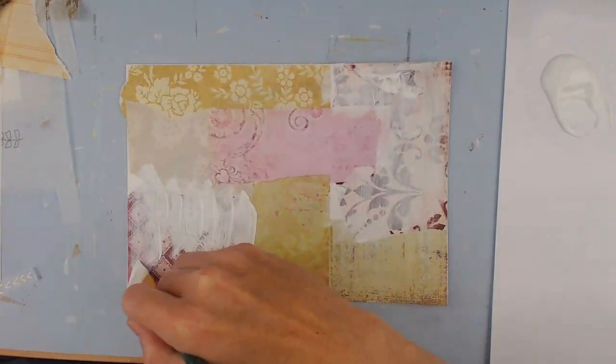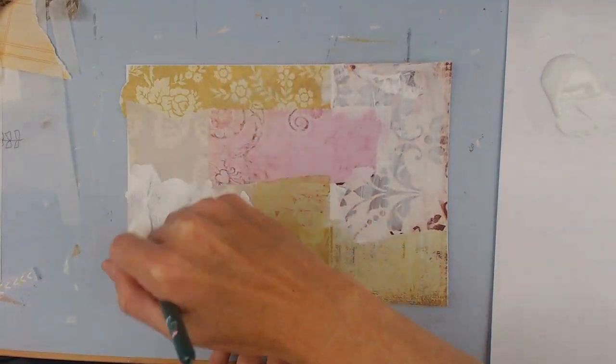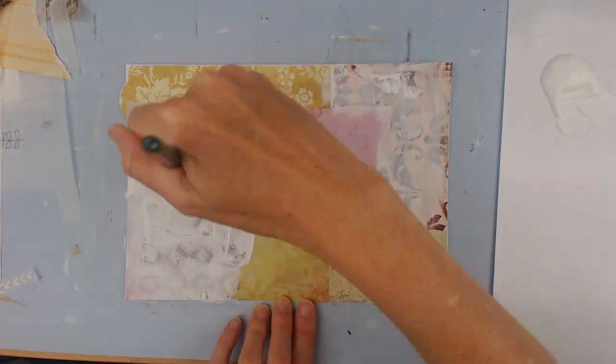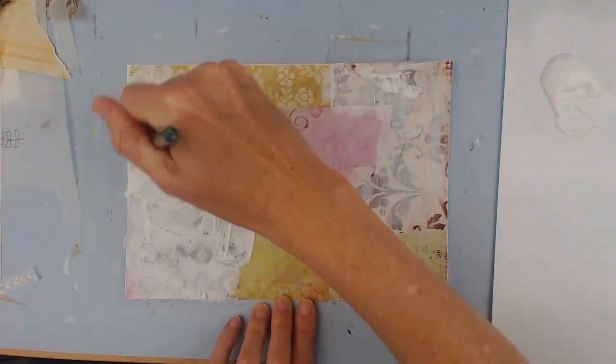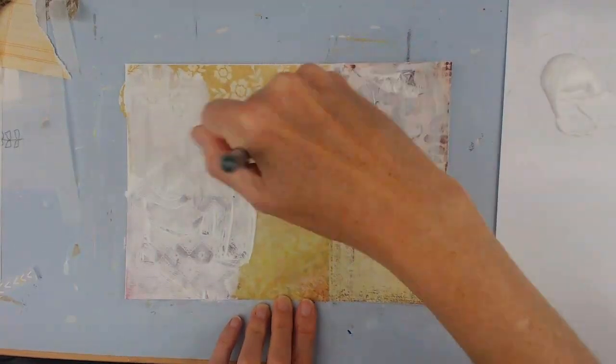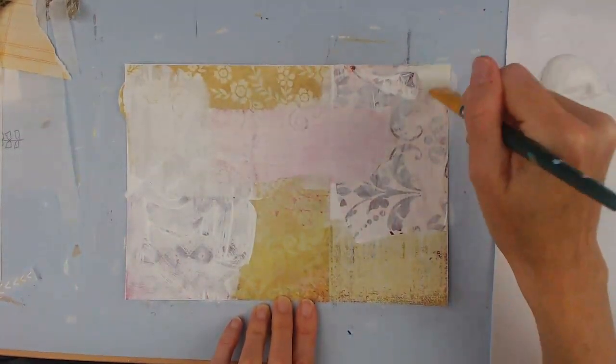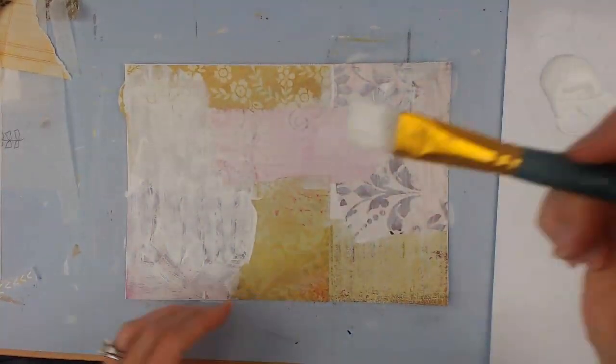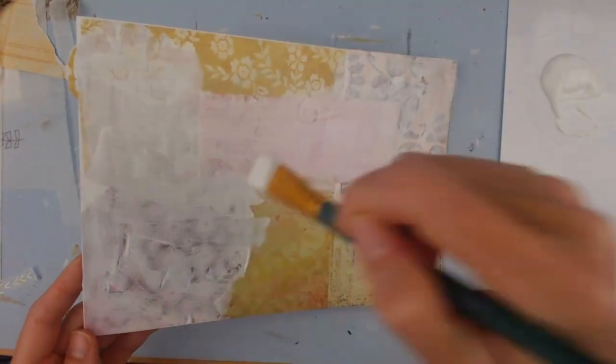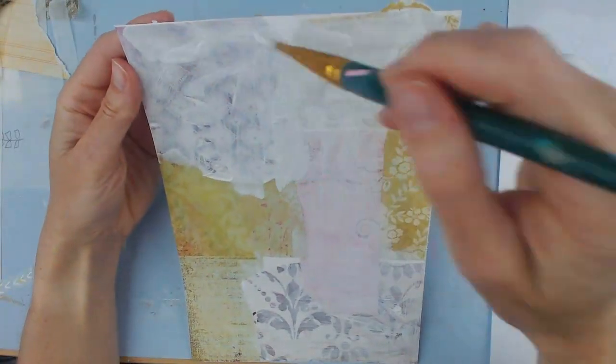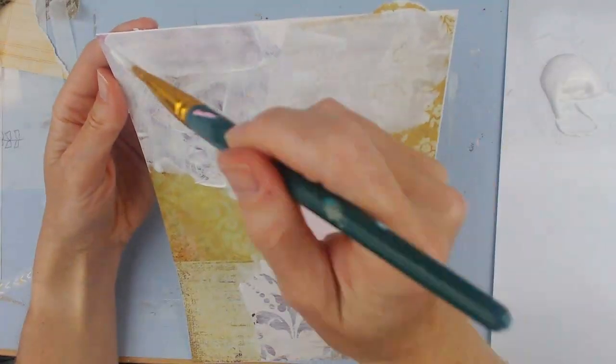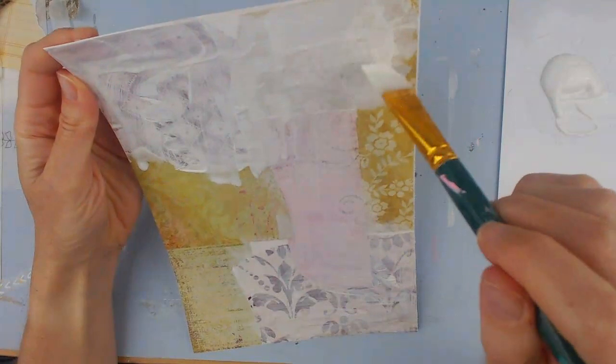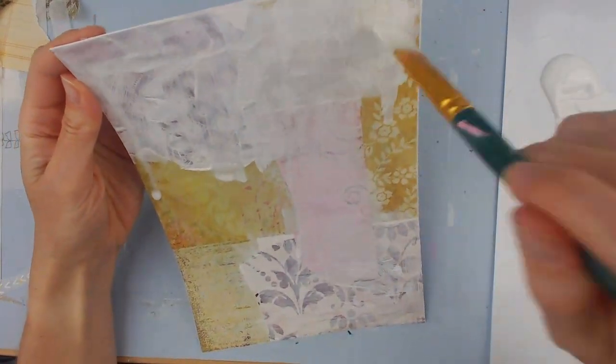Now this is gesso. I did kind of second guess my color choice—I didn't love the maroon tone on those papers, so I wanted to figure out a way to get it a little bit more in the background.